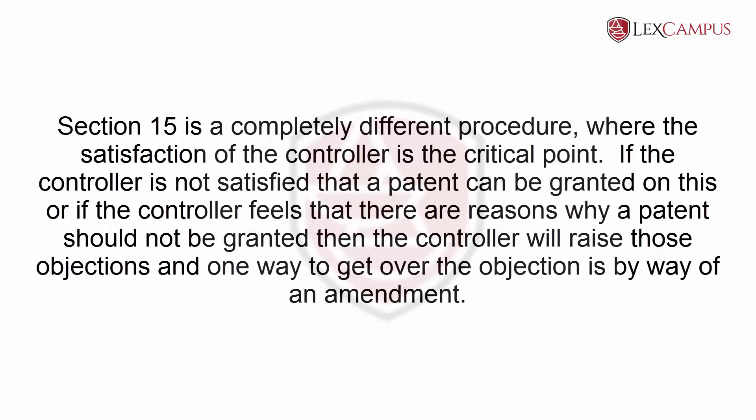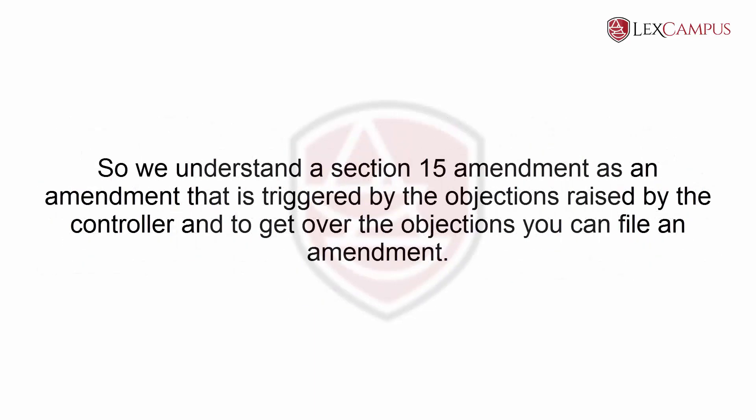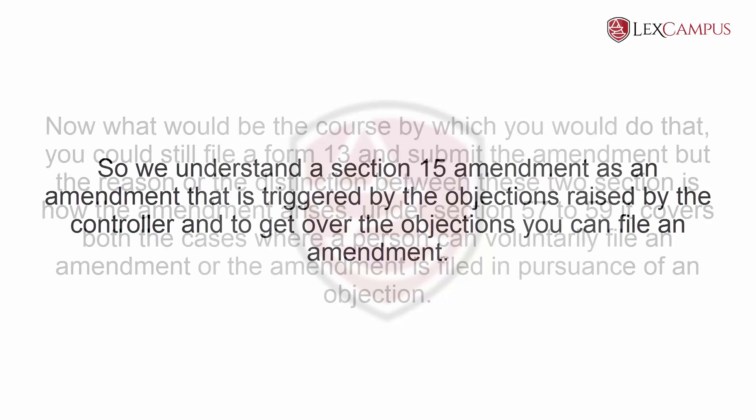Section 15 is a completely different procedure where the satisfaction of the controller is the critical point. If the controller is not satisfied that a patent can be granted, or if the controller feels there are reasons why a patent should not be granted, the controller will raise those objections. One way to get over the objection is by way of an amendment. So we understand a Section 15 amendment as an amendment that is triggered by the objections raised by the controller.